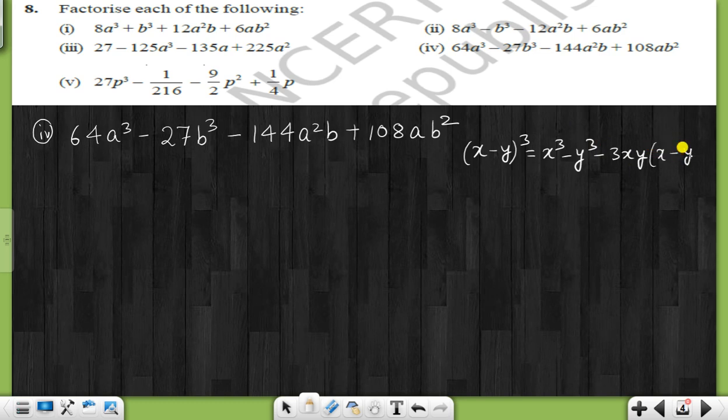Here we will use 64a³. 64a³ is 4a³. 4a 3 times multiply, then 4 times 4 times 4 is 64a³. Right? Here we will change to 27b³. Then 27b³ is 3b. 3b 3 times, we can use 3 times 3 times 3 is 27b³.